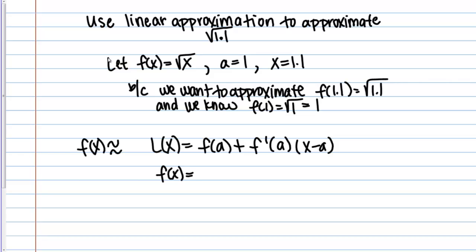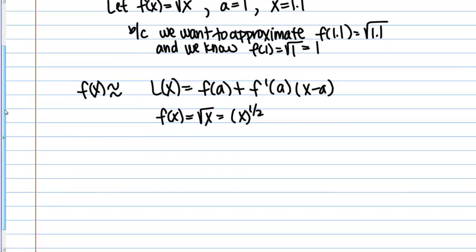Remember F of X we said was going to be square root of X, which we can also write as X to the 1 half. If I take the derivative of that, I get F prime of X. I bring down the 1 half, so 1 half X to the negative 1 half. I can write that as 1 over 2 square root X. We have our derivative. We know F of A. We can figure out F prime of A. Then X minus A, we know X, we know A. We're ready to plug and chug now.